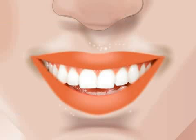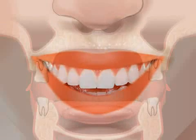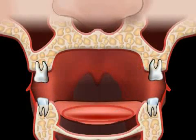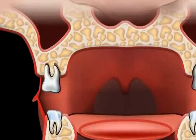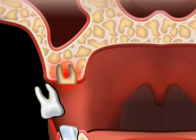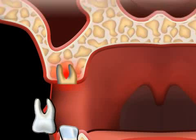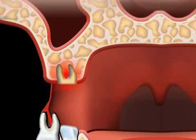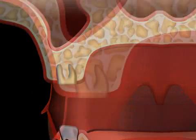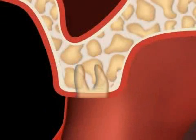The term alveolar atrophy refers to the regression of the teeth-supporting crescent-shaped osseous part of the upper and lower jaw. After tooth loss, the bone no longer receives chewing forces where the tooth was lost, and the alveolar ridge regresses.